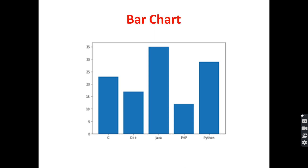This is called a bar chart. A bar chart is drawn between the x-axis and y-axis. On the x-axis, C, C++, Java, PHP, and Python are shown. On the y-axis, values 0, 5, 10, 15, 20, 25, 30, and 35 are shown. It represents how many members wrote the C exam, the C++ course, the Java course, the PHP course, and the Python course. That can be drawn using a bar chart.